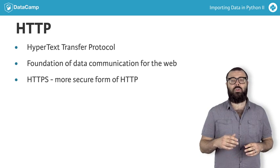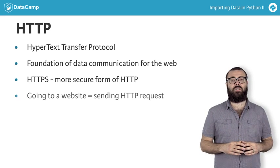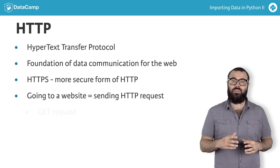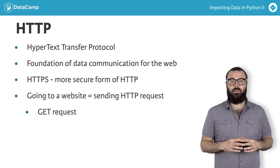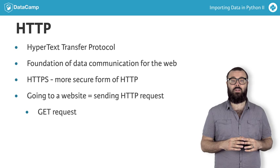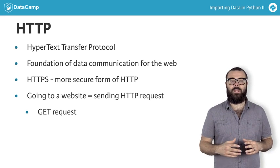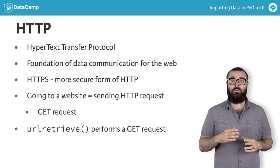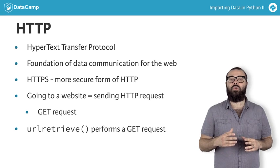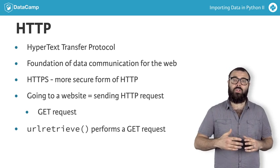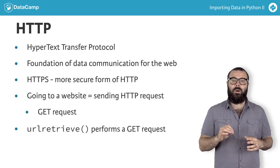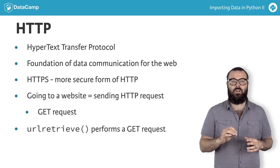Each time you go to a website, you are actually sending an HTTP request to a server. This request is known as a GET request, by far the most common type of HTTP request. We are actually performing a GET request when using the function URL retrieve. The ingenuity of URL retrieve also lies in the fact that it not only makes a GET request, but also saves the relevant data locally.